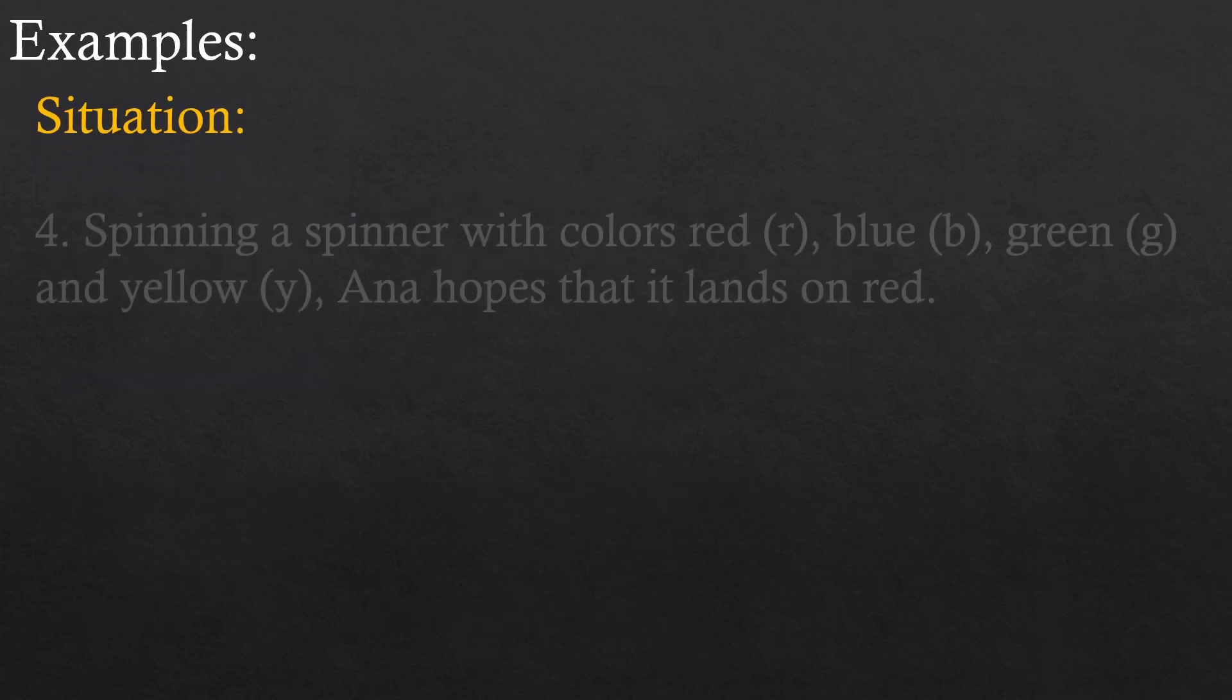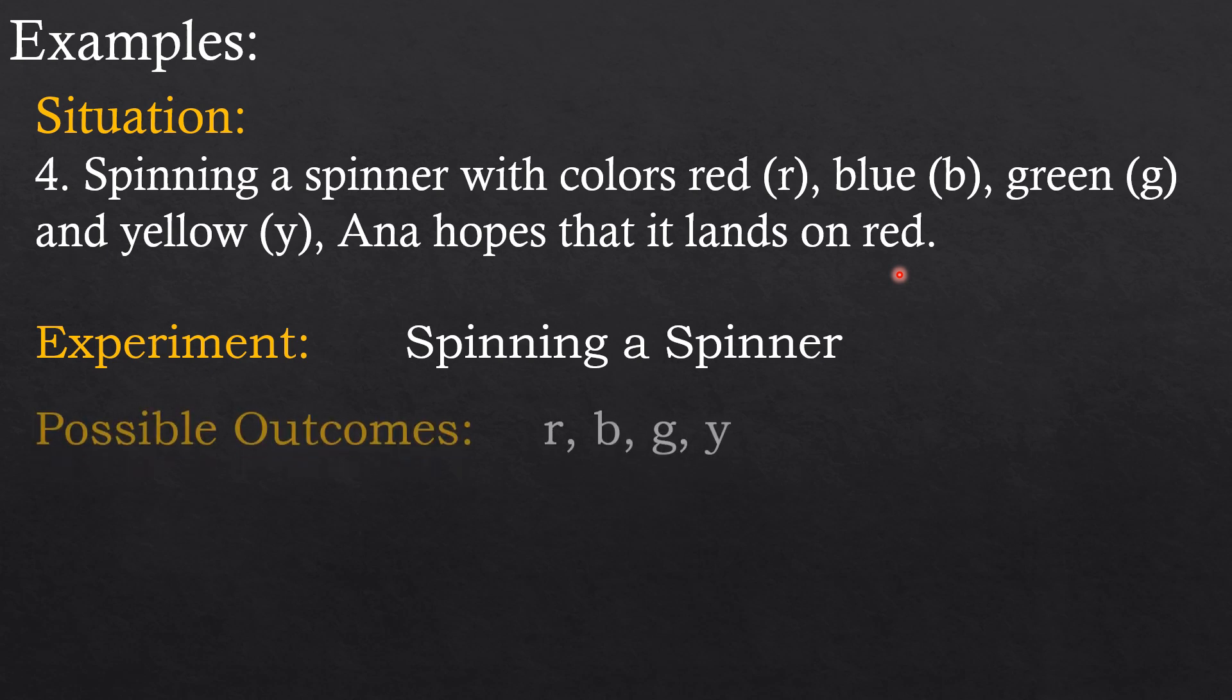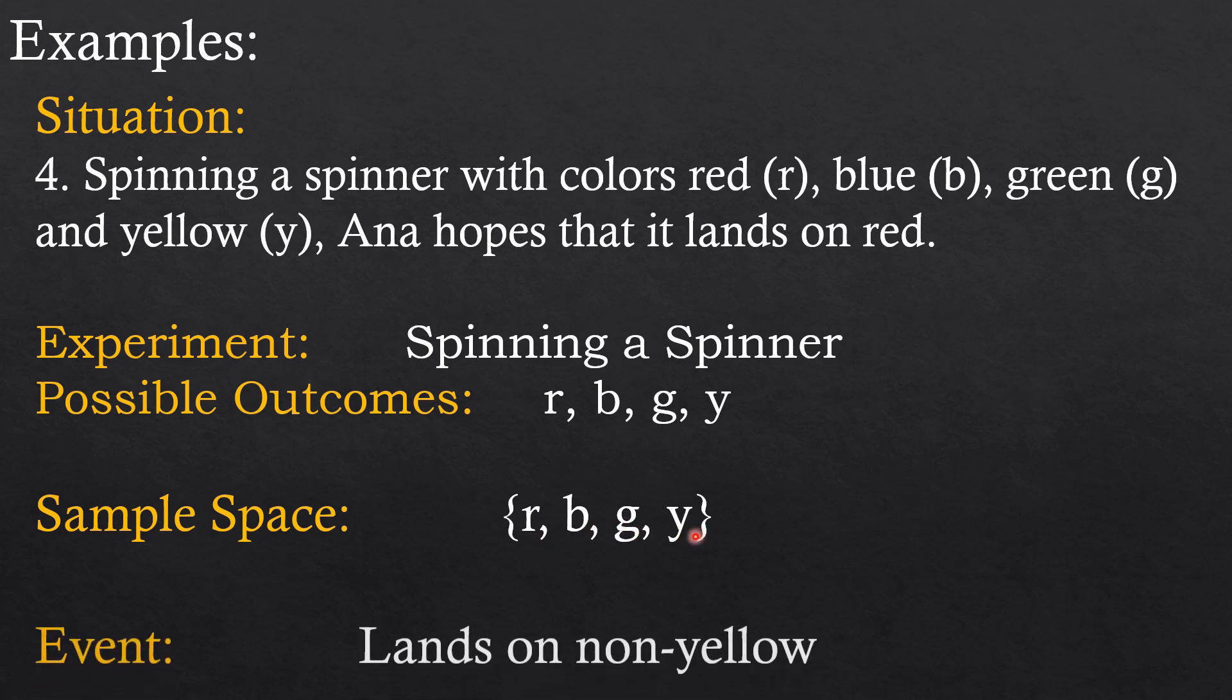Let's proceed to example number four: spinning a spinner with colors red, blue, green, and yellow. Anna hopes it lands on red. The experiment is spinning a spinner. The possible outcomes are red, blue, green, and yellow. Sample space are all the possible outcomes: red, blue, green, and yellow. And the event is lands on non-yellow.